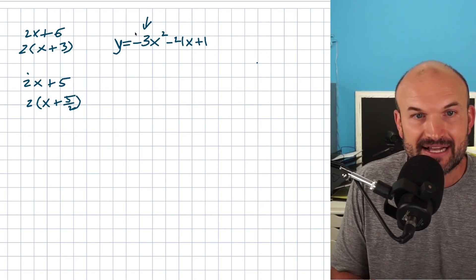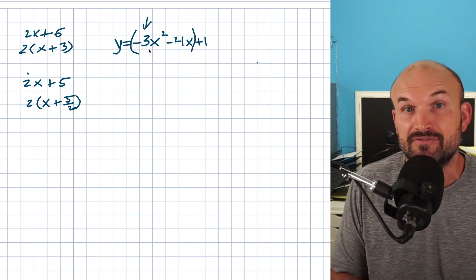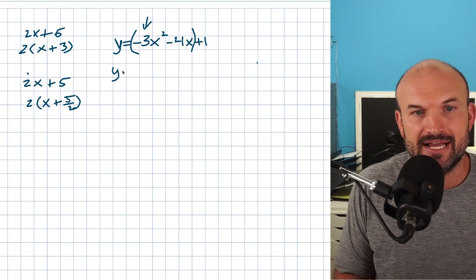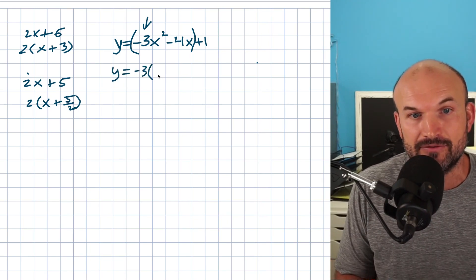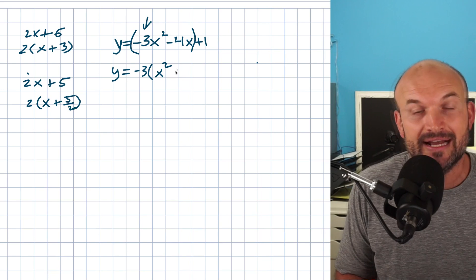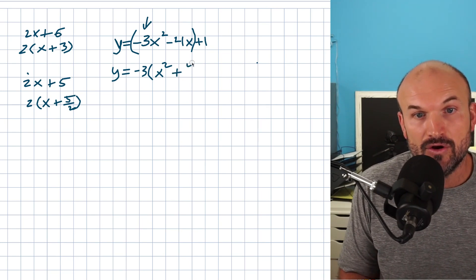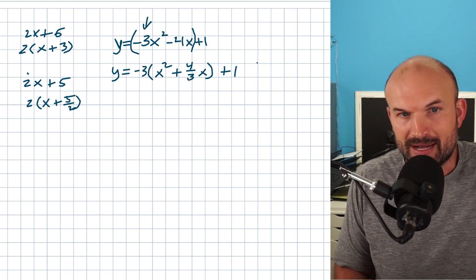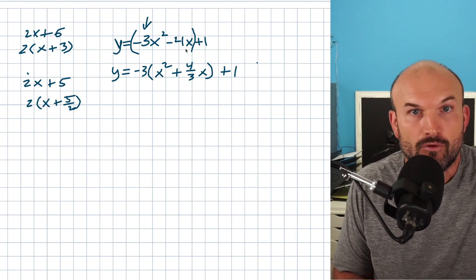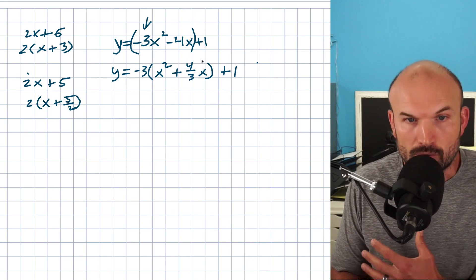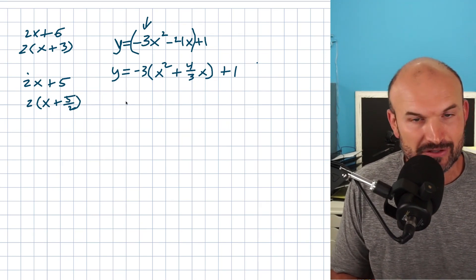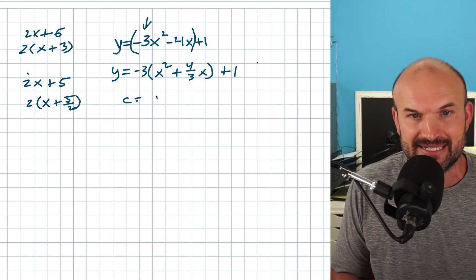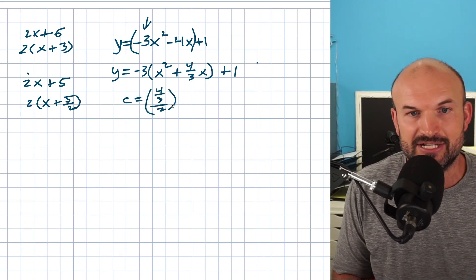That's the same process we're applying here — but we're only focusing on the first two terms; keep that constant off to the side for now. First I factor out negative three, which leaves x squared. The negative 4x term becomes positive four thirds x inside the parentheses. Now I move on to finding the perfect square trinomial: c equals b divided by two, quantity squared — in this case, four thirds divided by two, quantity squared.